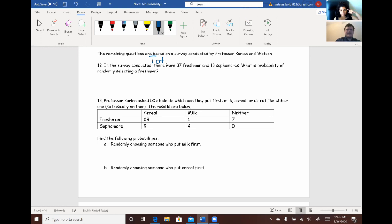So, for the total, we just take the 37 freshmen plus the 13 sophomores. And so, we know there was 50 students total. So, once we have that, we're just going to take the 37 freshmen, because that's the ones we want, and divide it by the total. So, in this case, 50.